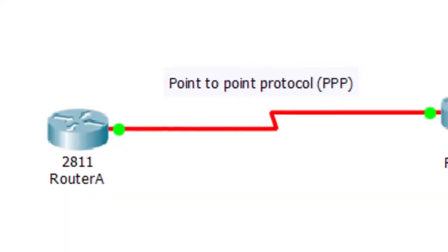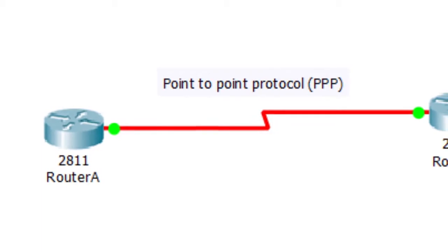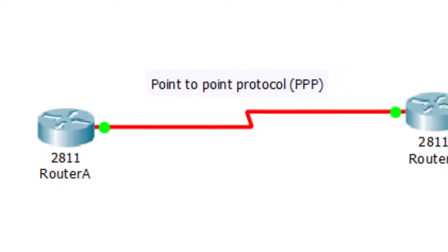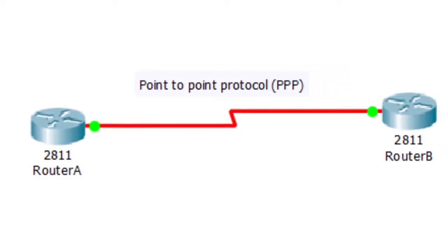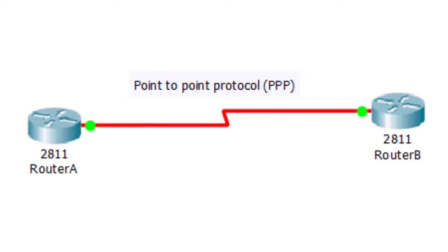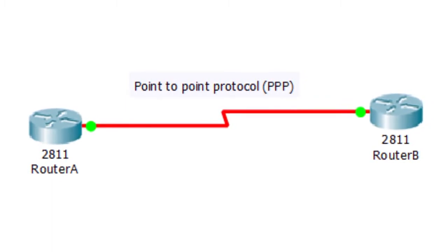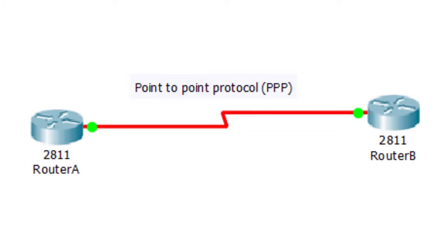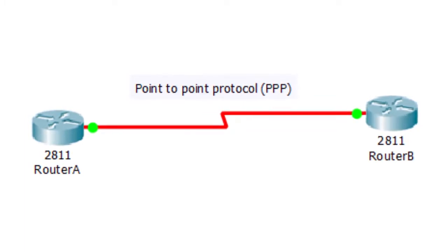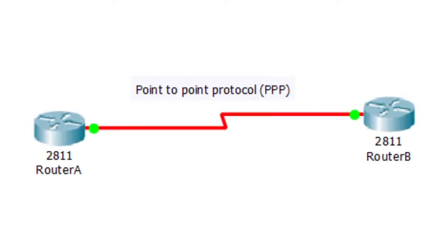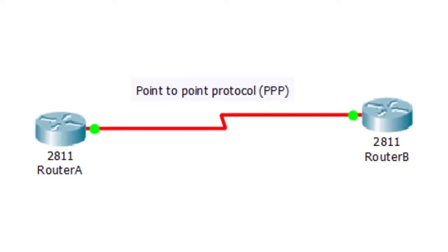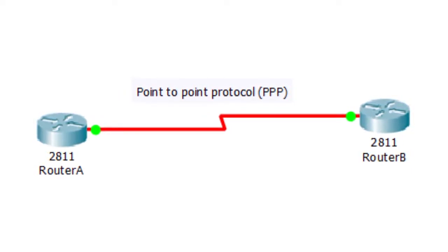PPP supports the transmission of network packets over a serial point-to-point link by specifying framing mechanisms for encapsulating network protocols — such as Internet Protocol, Internetwork Packet Exchange, or NetBEUI — into PPP frames. PPP encapsulation is based on the high-level data link control, derived from the mainframe environment.